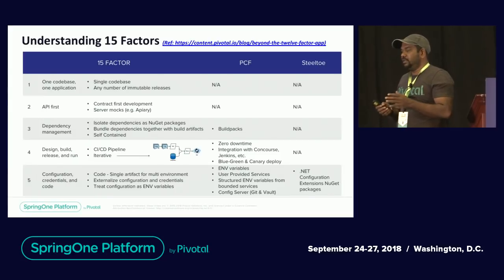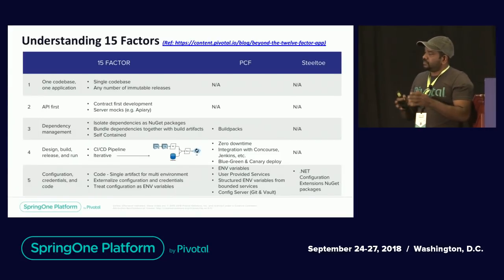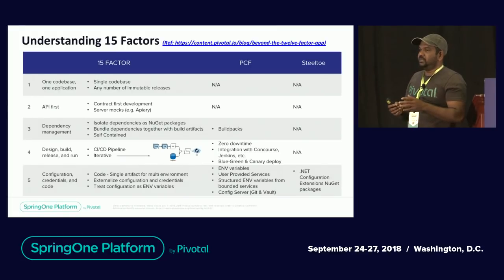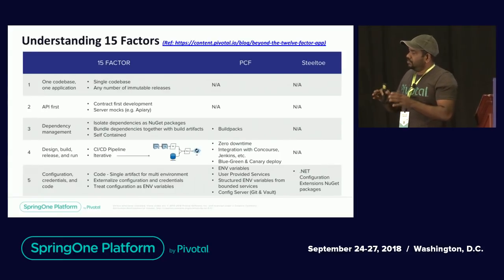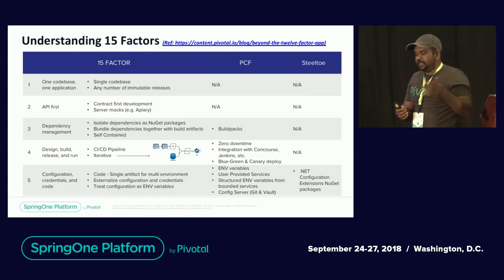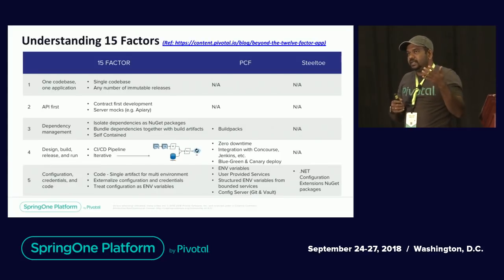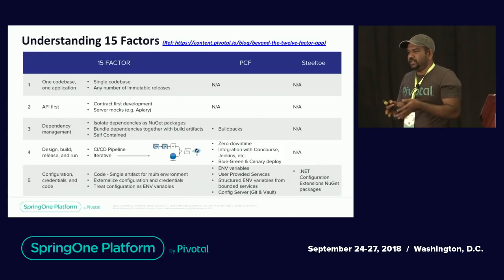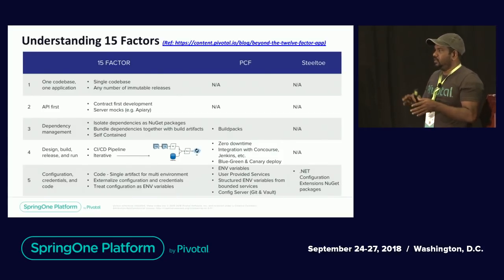One codebase, one application: you should have your application in a single repository — it's a best practice. For dependency management, your published artifacts should have all dependencies bundled together to be self-contained. When you push your app to cloud, your container will be a blank operating system with nothing installed, so everything must be part of your application.